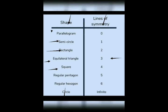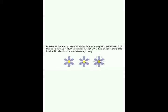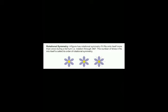A circle has infinite lines of symmetry. Now we take a new topic: rotational symmetry. A figure has rotational symmetry if it fits onto itself more than once during a full turn. In rotational symmetry, we rotate the figure through 360 degrees, and the number of times it fits into itself — the number of times the figure looks the same as the original — is called its order of rotational symmetry.